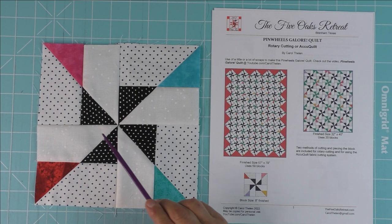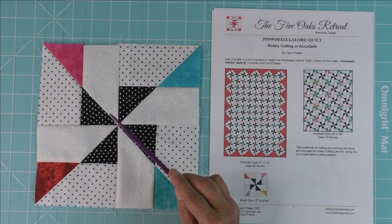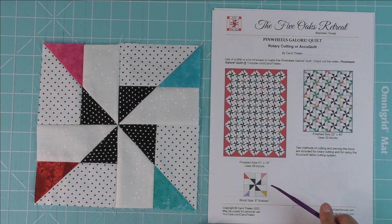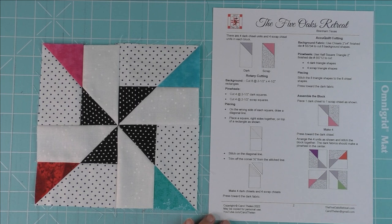You can make the center pinwheels either one fabric or all dark fabrics or all dark in a single color way, however you want. This is a really good way to use up your scraps. There's a link to my blog where you can download these instructions and I show you how to do the rotary cutting and piecing and then the AccuQuilt cutting and piecing.